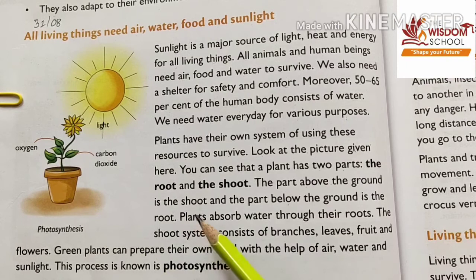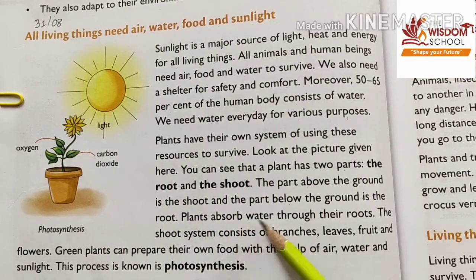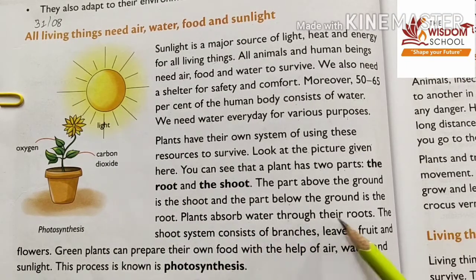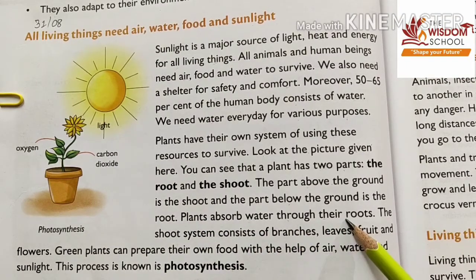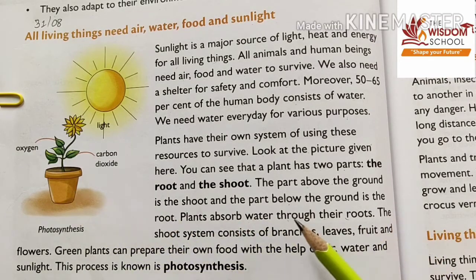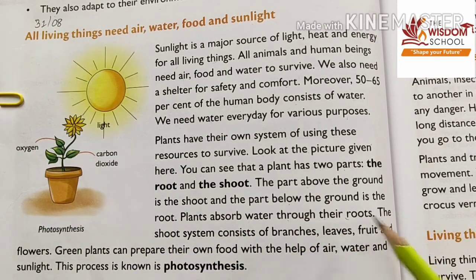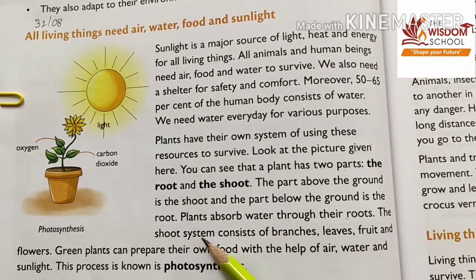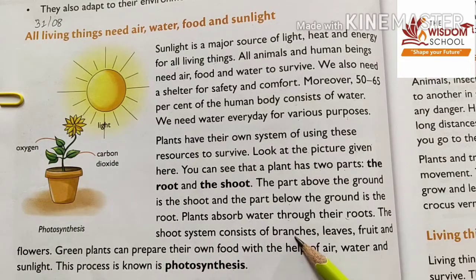Plants absorb water through their roots. The shoot system consists of branches and leaves.